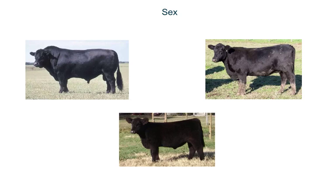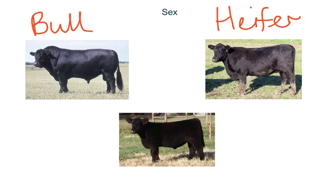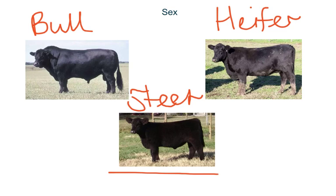Sex is a fairly straightforward specification — whether the animal is a bull, heifer, cow, or steer. Usually steers receive higher prices at market than heifers or bulls. Bulls are in a separate category because, especially if they've been working, they develop a taint to their meat. There is demand for that, but the majority of mainstream markets prefer steers or heifers.